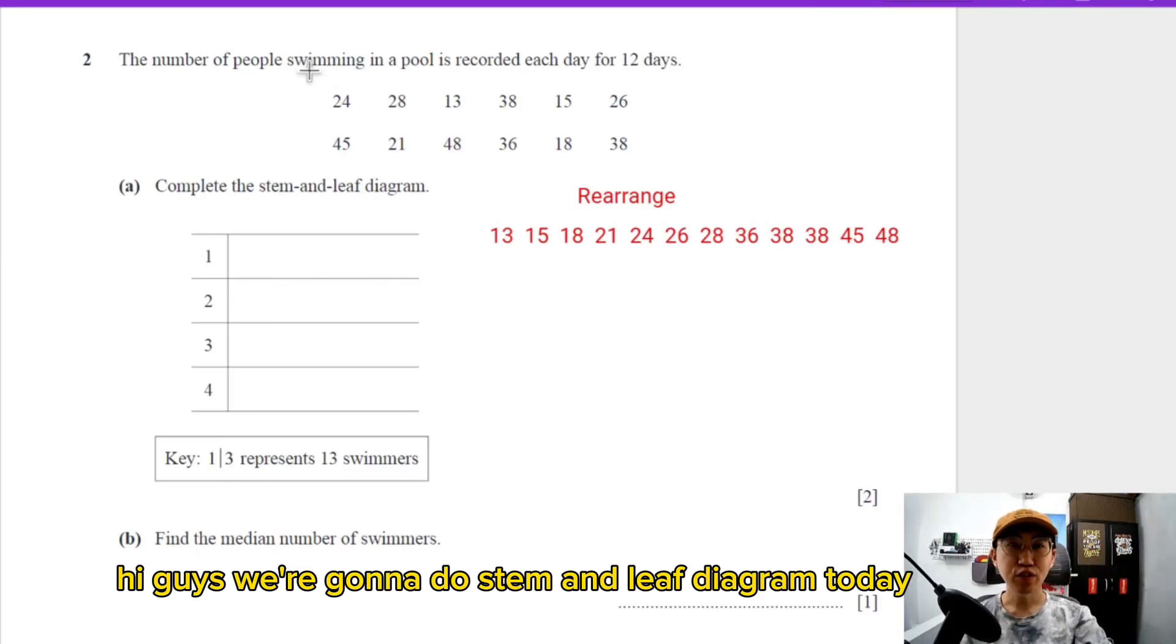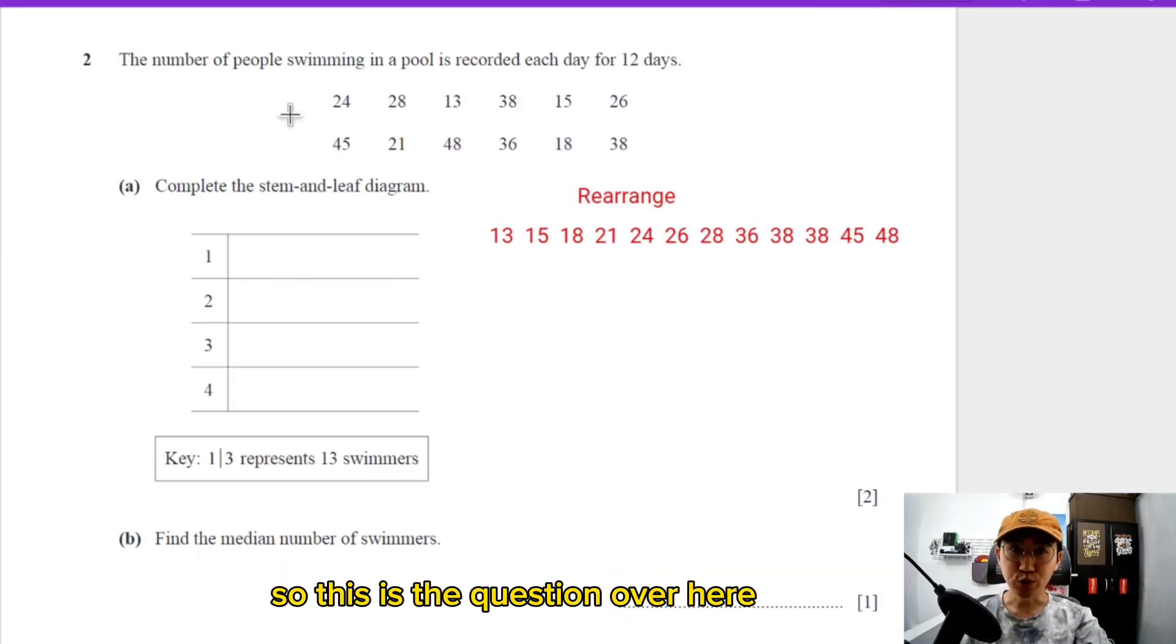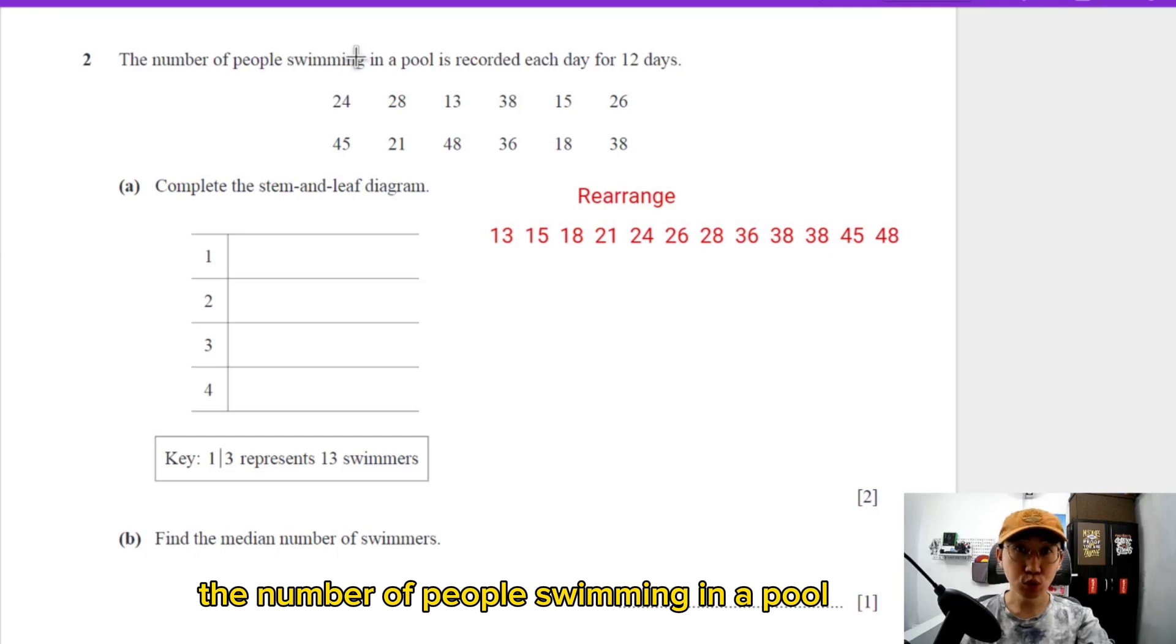Hi guys, we are going to do stem and leaf diagrams today. This is the question: the number of people swimming in a pool is recorded each day for 12 days, so they give you 12 sets of data.